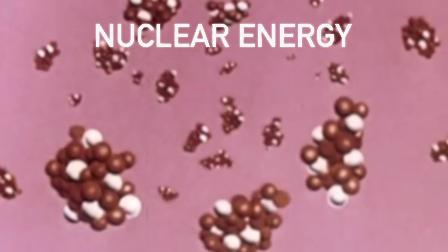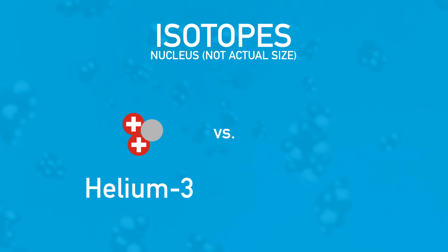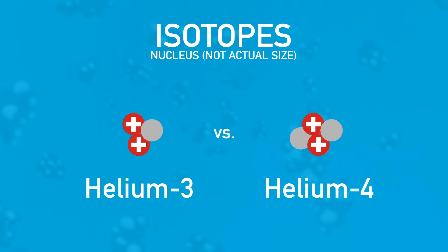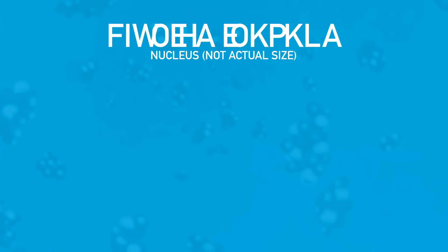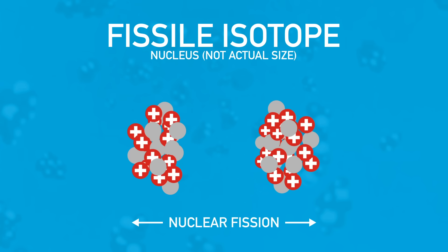Nuclear energy is created by splitting apart certain types of large isotopes, called fissile isotopes. Isotopes are variations of an element that have different numbers of neutrons, and some are more stable than others. A fissile isotope breaks apart when a neutron hits it, and even once in a while on its own. When it breaks apart, that's called nuclear fission, and it's the isotope's way of trying to become more stable. When it does, kinetic energy that's converted to heat is released, and that energy is ultimately what powers an electrical grid.